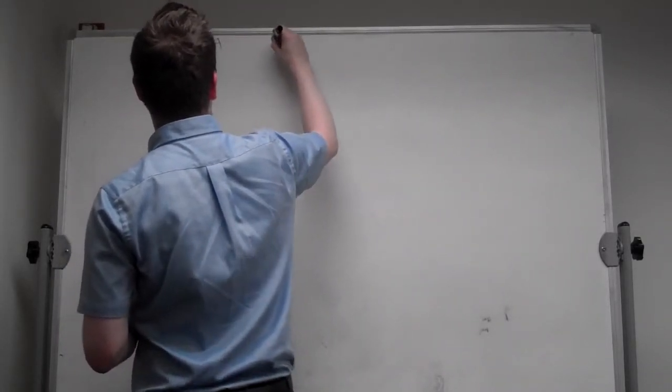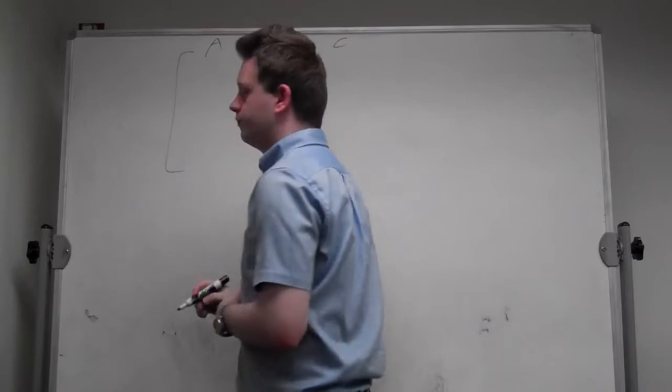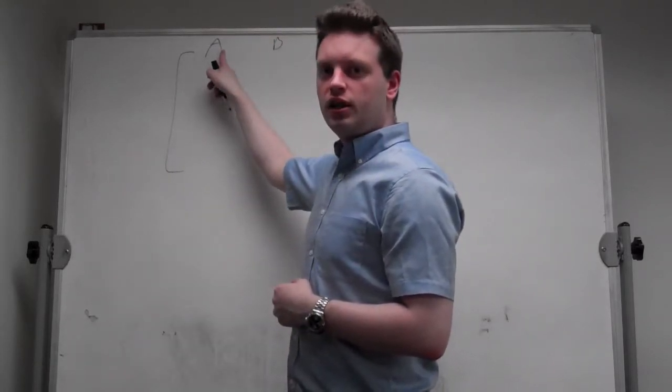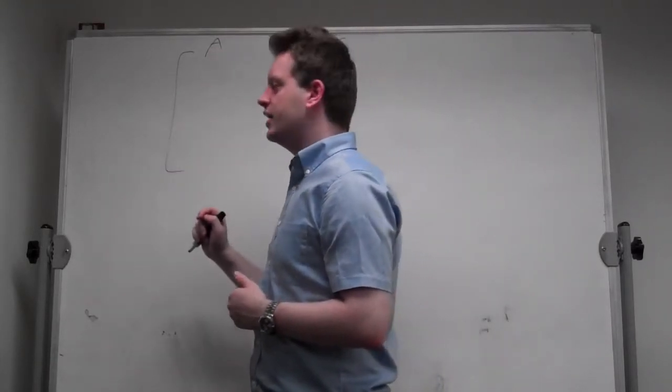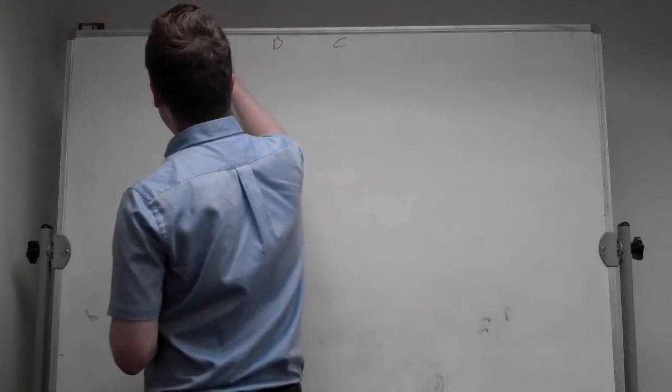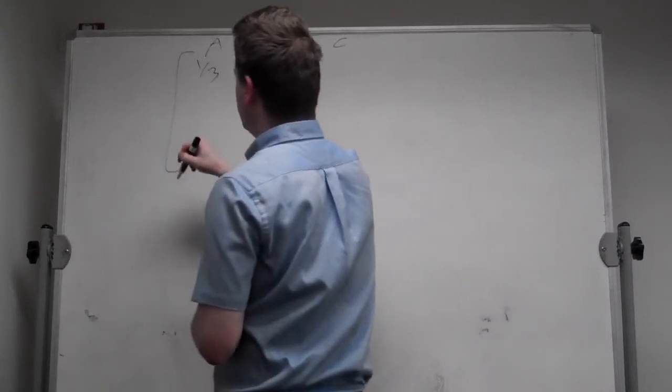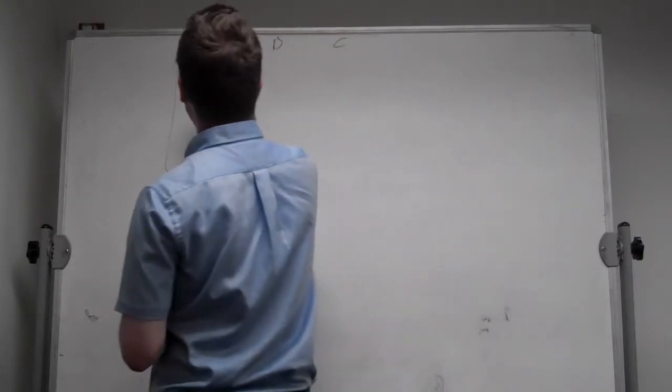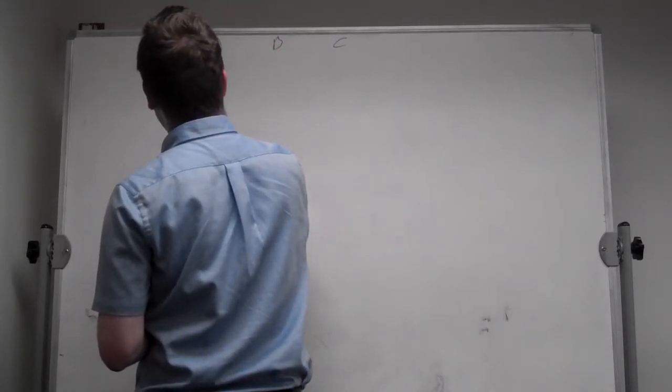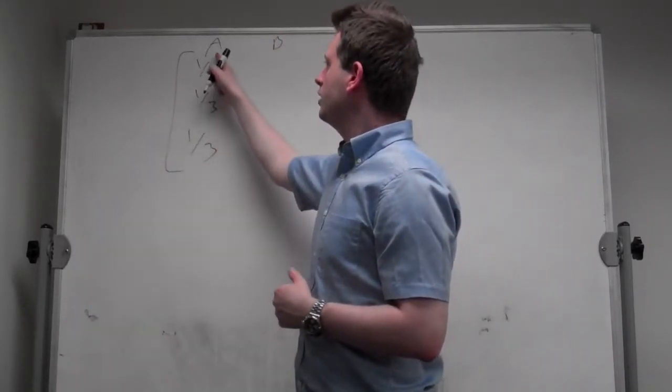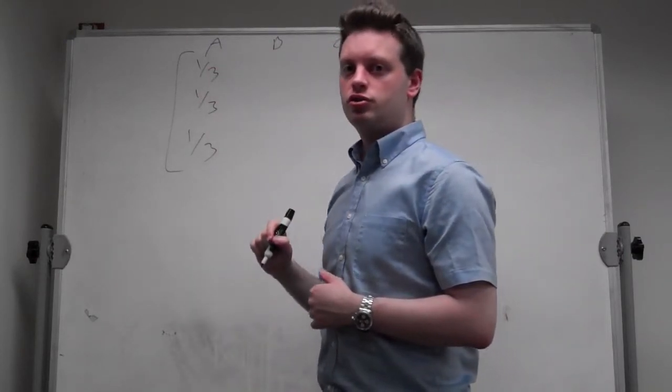We have three states: A, B, and C. The probability of staying in state A, so if you're in state A to be in state A again, is 1/3. The probability of going to state B from state A is 1/3. And the probability if today's state is state A going to state C tomorrow is also 1/3.